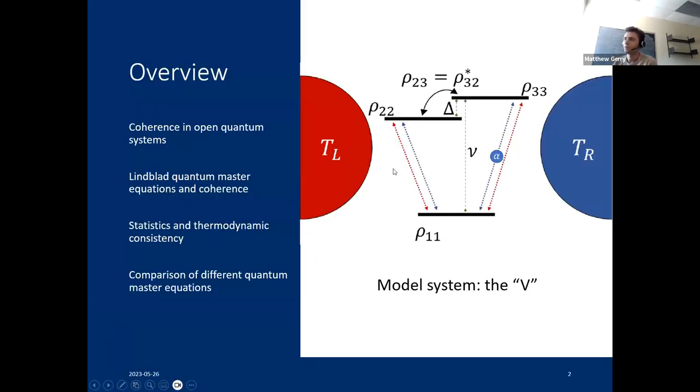I'll quickly try to motivate why it's interesting to think about coherence in open quantum systems, although it seems like a lot of the talks in this session have been talking about similar topics anyway. Then I'll talk about how we get quantum master equations of Lindblad form that can take into account coherences and go a little bit into the properties of these master equations with respect to thermodynamics and statistics, and also comparing different master equations.